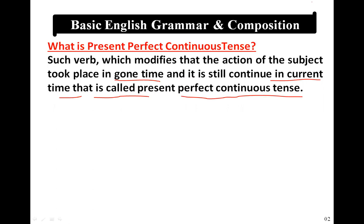Dear students, first look at this carefully: such an action which the subject started in the past, and it has not finished in the current time — it is continuing in the current time. In Present Perfect Tense we learned that an action the subject started in the past was completed in the current time. But in Present Perfect Continuous, the action started in the past but is still continuing. For example, a subject started some work at 2 o'clock in the past, and now it is 3 o'clock but the work is still continuing — it has not been completed. That is called Present Perfect Continuous Tense.